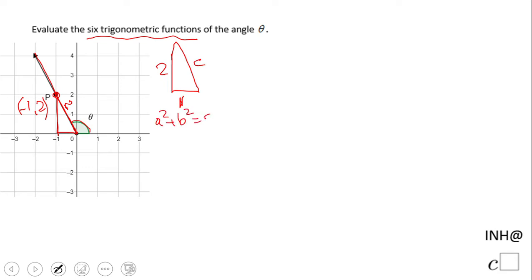equals c². So we're gonna have 1² + 2² equals c². 1 + 4 equals c², so c² = 5.